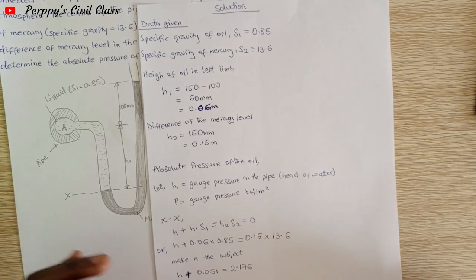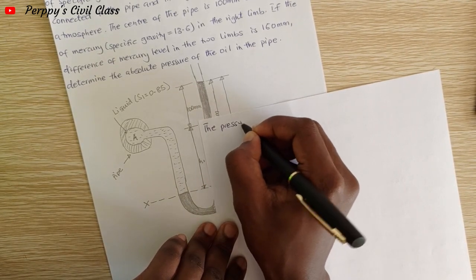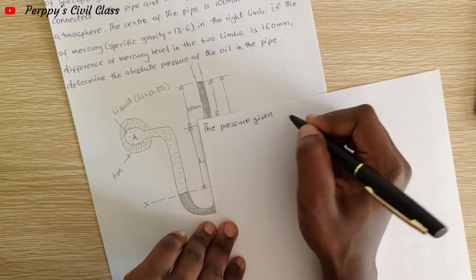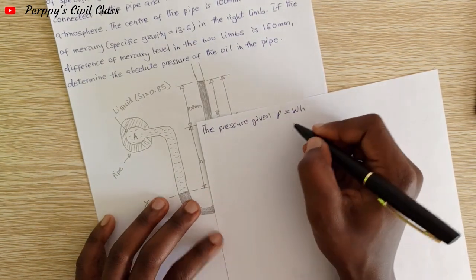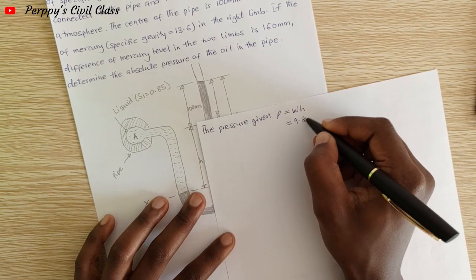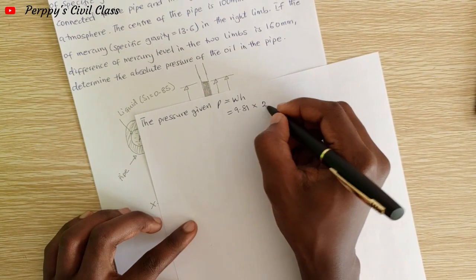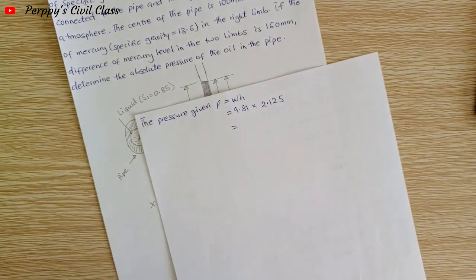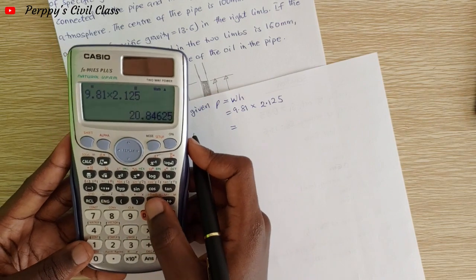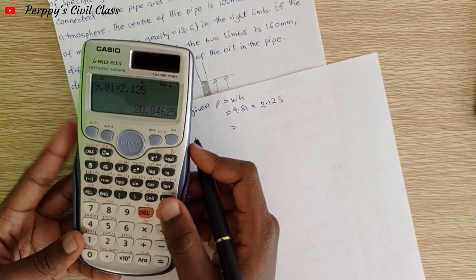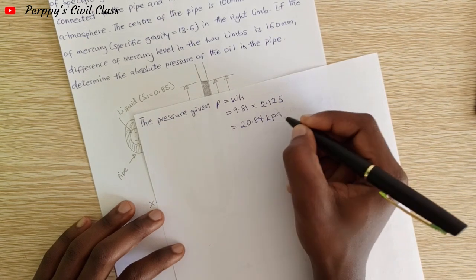The pressure given is P equals 9.81 times 2.125, which gives us 20.84 kilopascals.